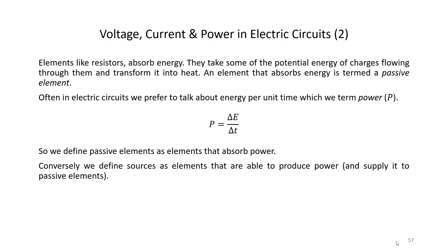In the circuit we saw previously, the voltage source gave charges a lot of energy, and then this potential energy was partially lost as the charges flowed through the resistor. An element that absorbs energy, like a resistor, is termed a passive element. In electric circuits we prefer to talk about energy per unit time, which we call power. We define power as the ratio of the energy expended, delta E, over a specific time interval, delta T.